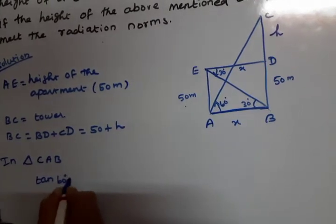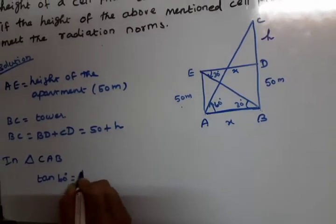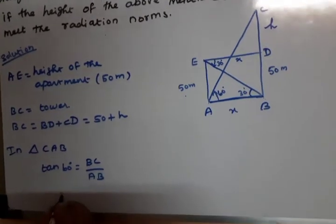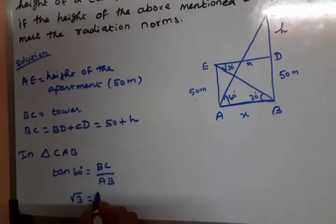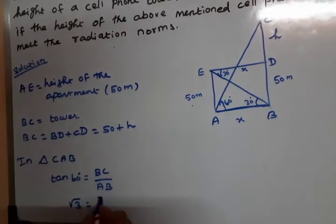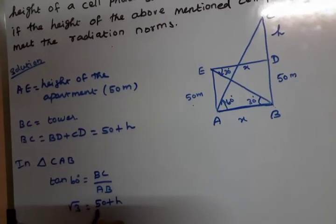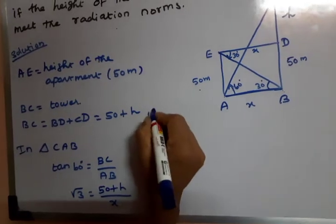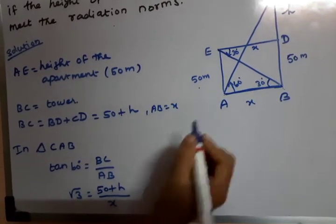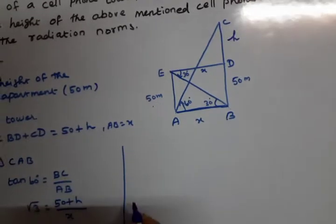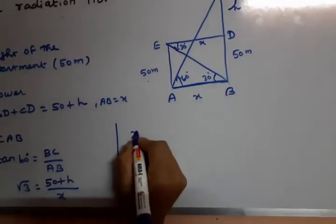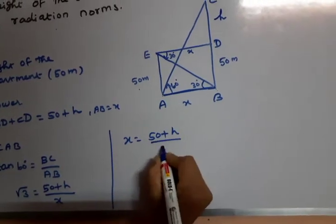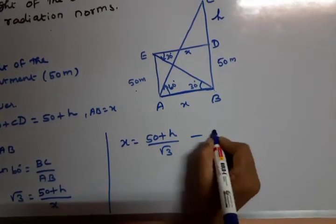In triangle CAB: tan 60° equals BC divided by AB. So x equals (50 plus h) divided by root 3. This is the first equation.